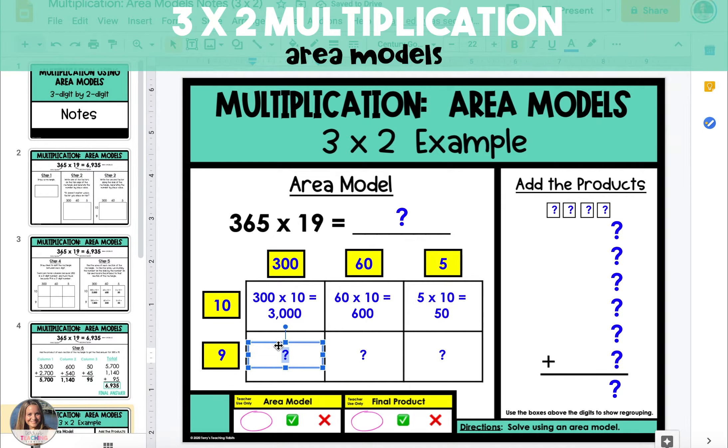Now we're going to multiply the bottom sections. The bottom left section is 300 times 9 for an area of 2,700. The bottom middle section is 60 times 9 which equals 540, and the bottom right section is 5 times 9 which equals 45.